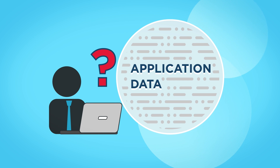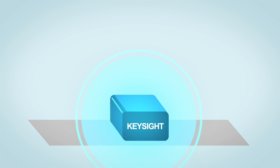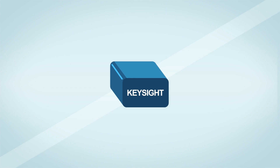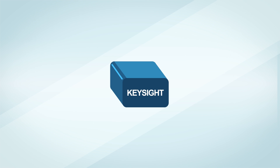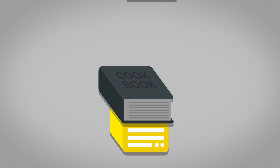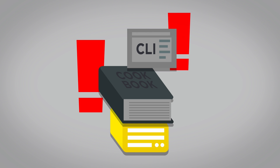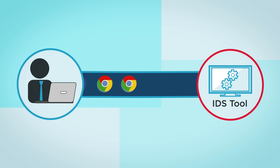What about application data? That's easy too. You don't have to create application definitions. A good packet broker has hundreds of application signatures predefined. Bad packet brokers give you a cookbook and a CLI interface for you to create and troubleshoot your own signature definitions. Who wants that?